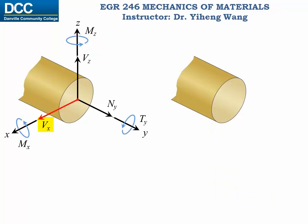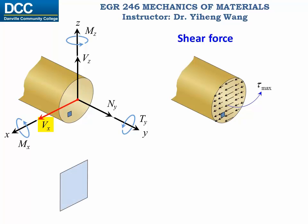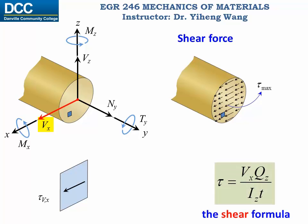For the shear force Vx along the x direction, the shear stress distribution is not linear, with the maximum shear stress occurring along the centroidal z-axis and zero shear stress at the edges furthest away from the z-axis. At an arbitrary location, the shear stress is calculated through the shear formula, where Qz is the static moment of the area about the z-axis, Iz is the area moment of inertia about the z-axis, and t is the thickness of the member at this location.